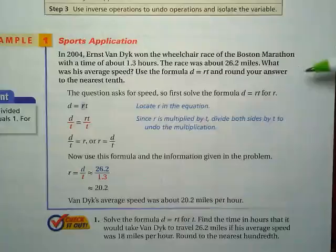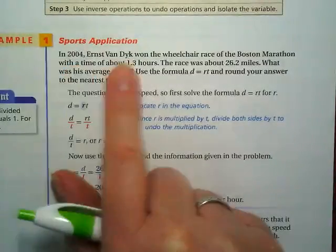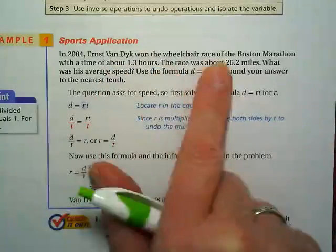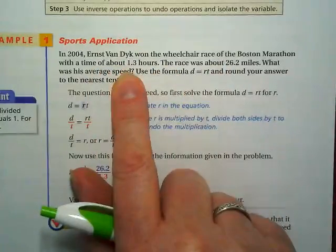This problem though is normal life and it's real. So in 2004, this guy Ernst Van Dyke won the wheelchair race of the Boston Marathon in 1.3 hours.